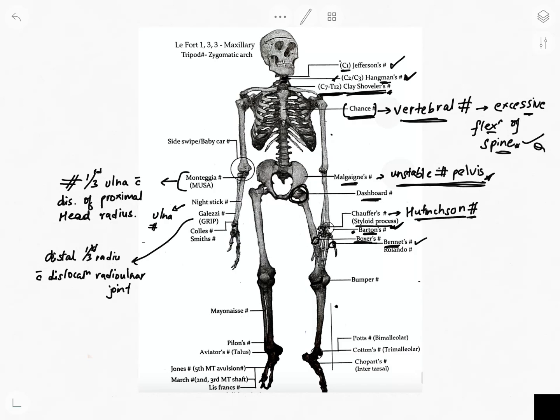Rolando's fracture is the comminuted intra-articular fracture through the base of the first metacarpal bone — the first bone forming the thumb. This is called Rolando's fracture.